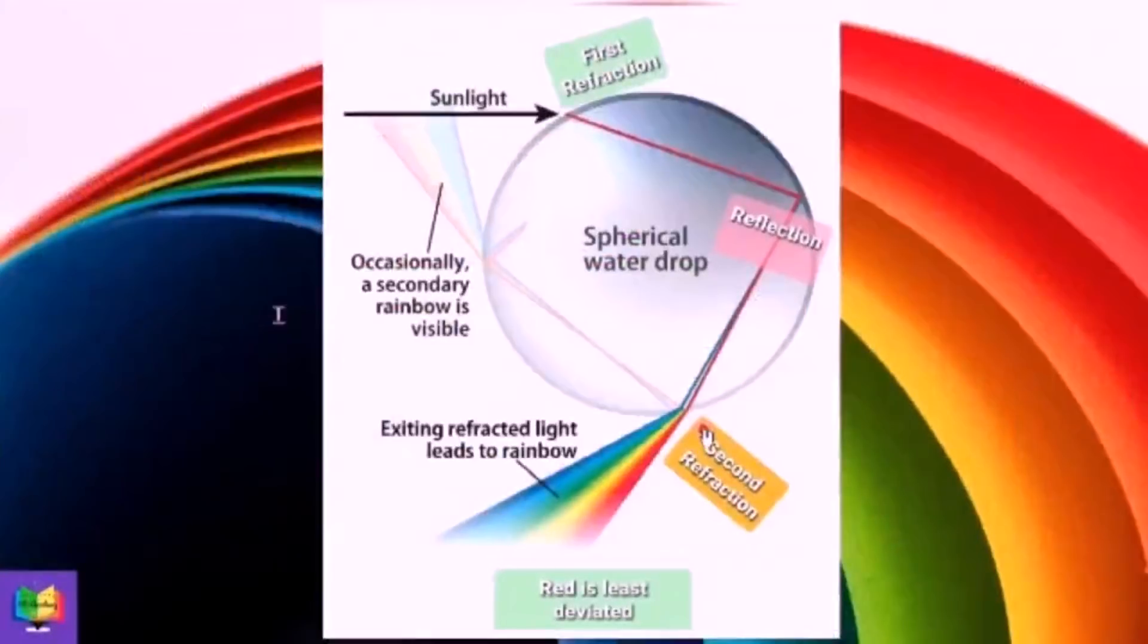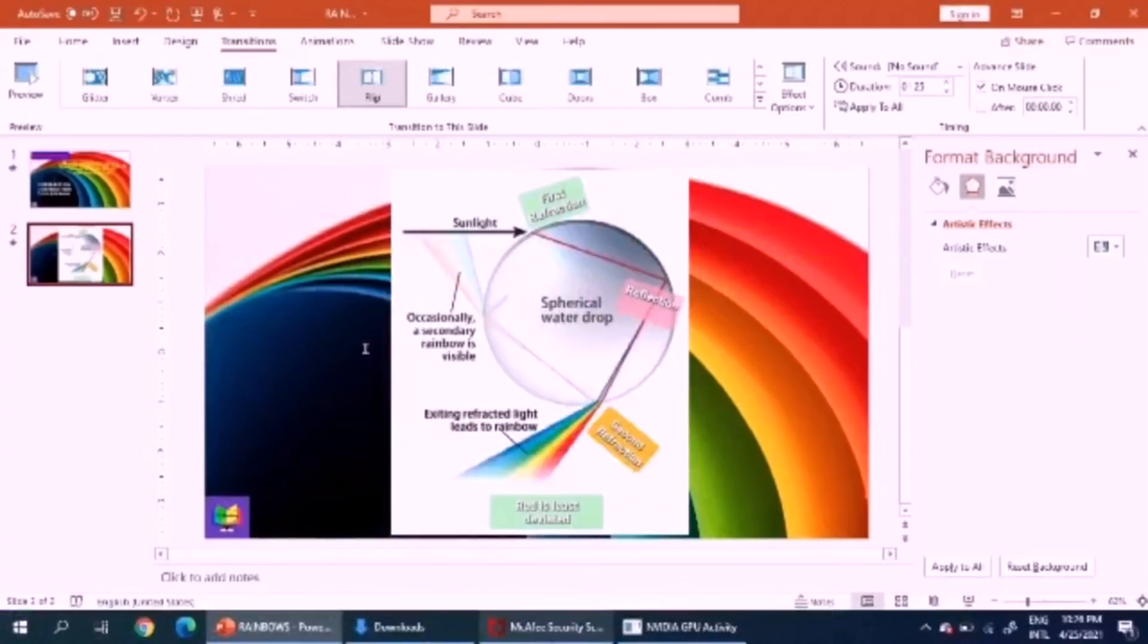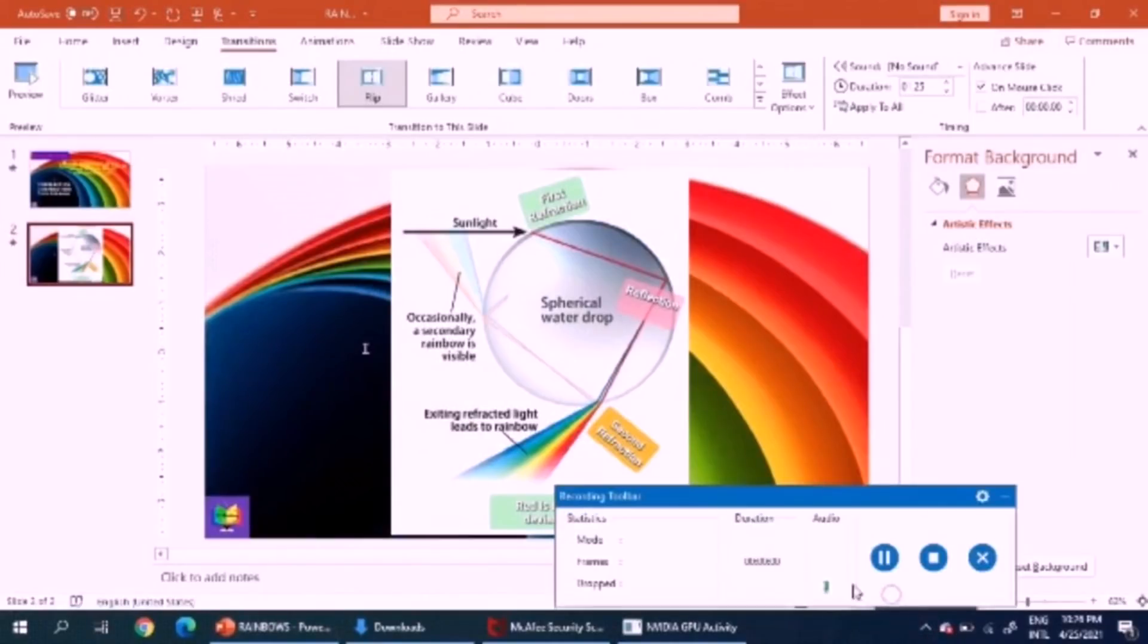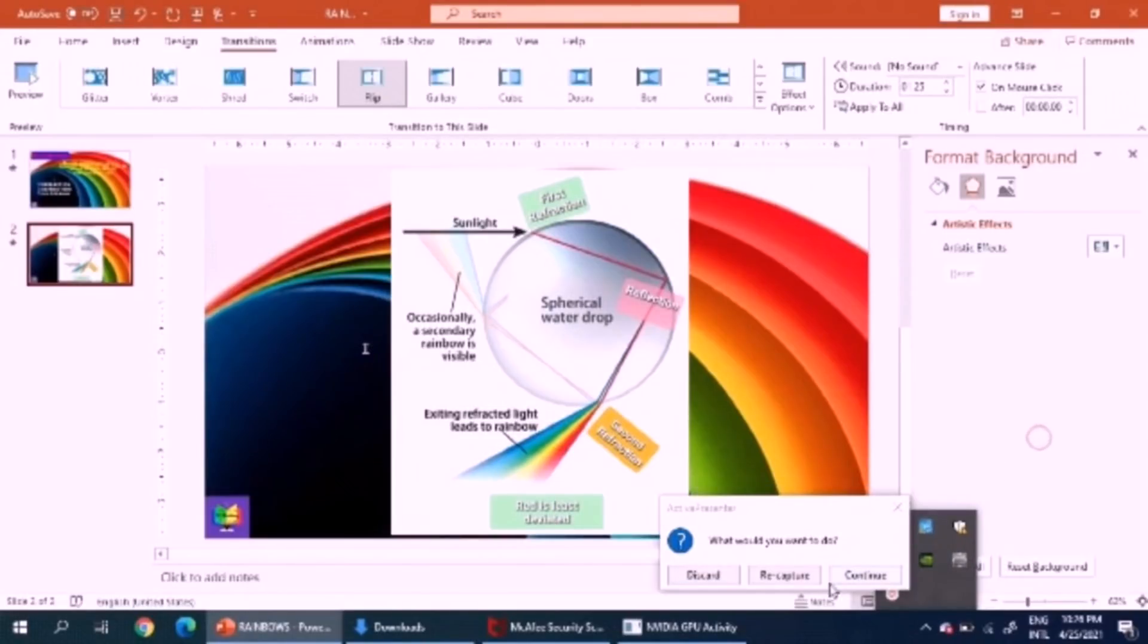The visible region of the electromagnetic spectrum shows that violet has the least wavelength, which is around 400 nanometers, hence this color is deviated the most, whereas red has the highest wavelength, which is around 700 nanometers.